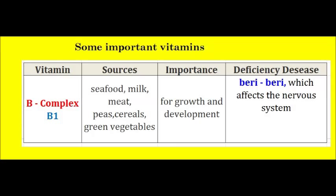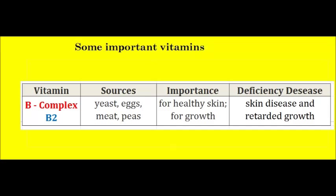Vitamin B2. Sources of Vitamin B2 are yeast, eggs, meat, and peas. The importance of Vitamin B2 is for healthy skin and for growth. Deficiency disease due to lack of Vitamin B2 is skin disease and retarded growth.